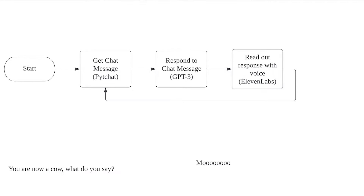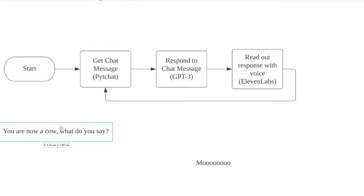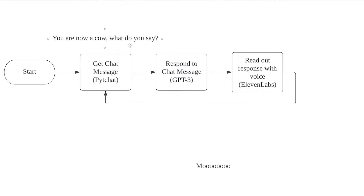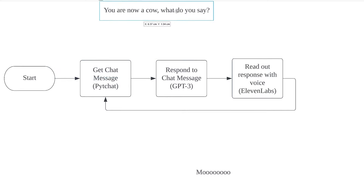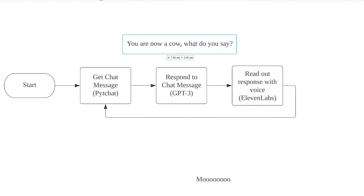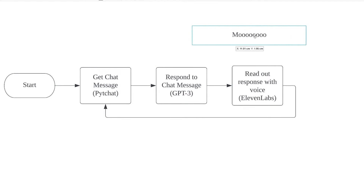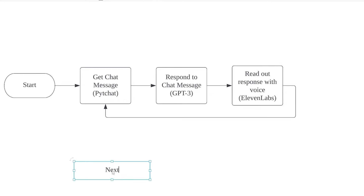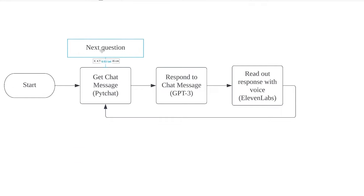Beginning with the planning phase, I created this simple flowchart on the process of this AI. Firstly, she will read a comment from the YouTube livestream chat and then send it over to a language model like GPT-3 so that she can respond to it. Finally, we are going to send her response to a text-to-speech program. After that, she is going to start all over and keep on reading and responding to the comments. This is the basic idea of this program.